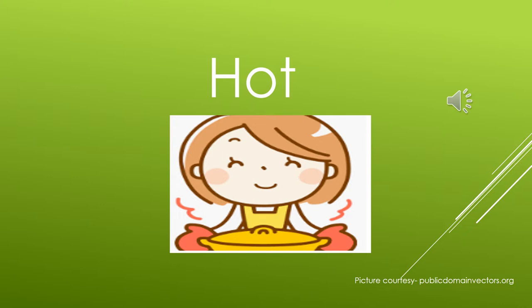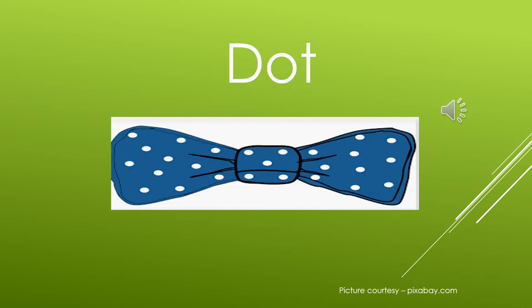Moving on to the next one. The sound of D is 'da', and then OT. Da, OT — dot. Can you see the white dots out here? Yes, that is da, OT — dot.